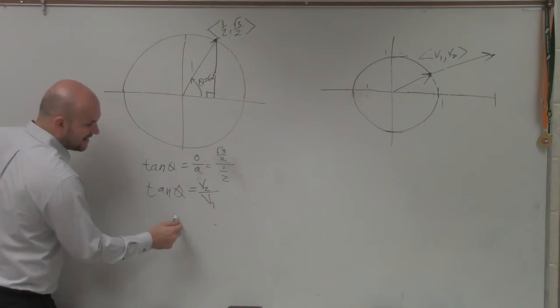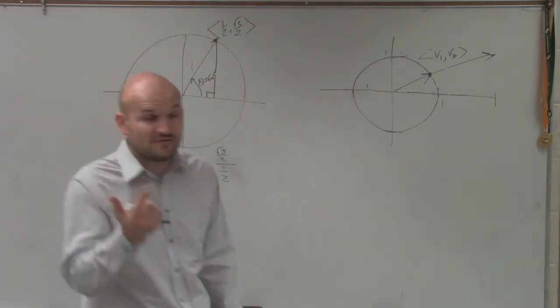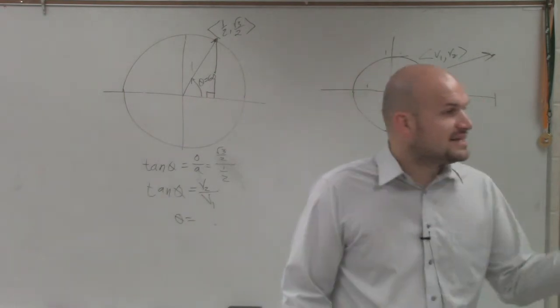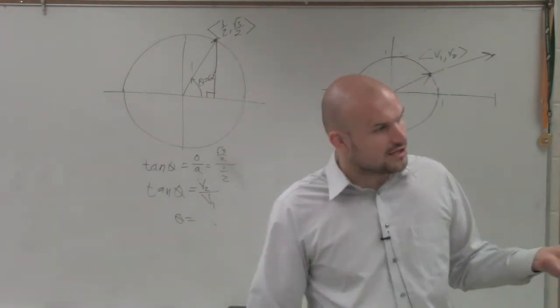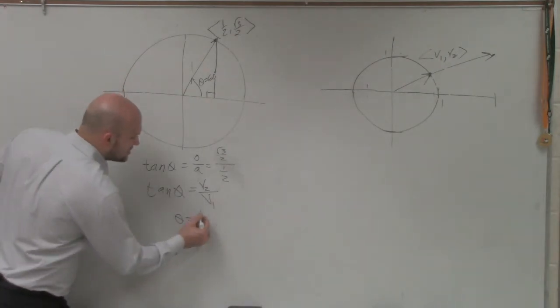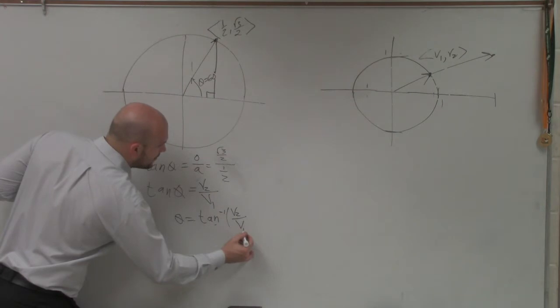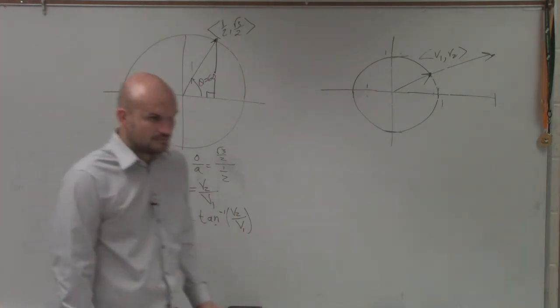Then to find theta, I know a lot of you didn't really like this because we didn't spend a chapter on it. But hopefully, since you guys had the test of law of sines, law of cosines, you remember a little bit about finding the inverses. So this would be tan inverse of v2 over v1.